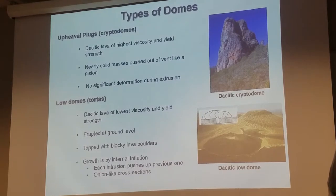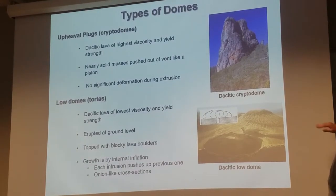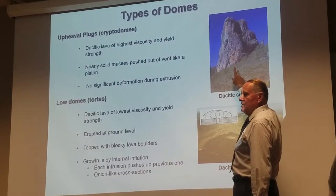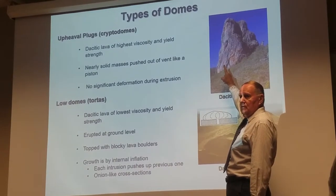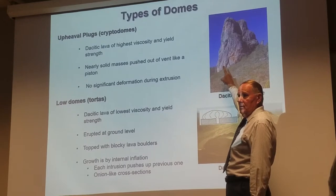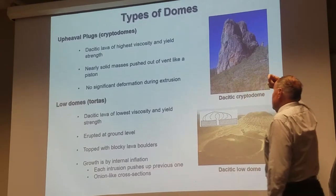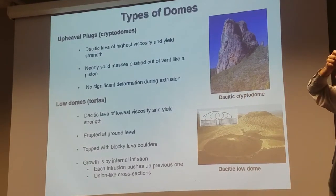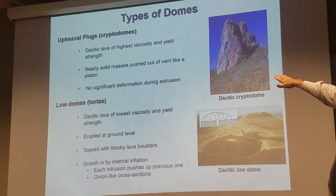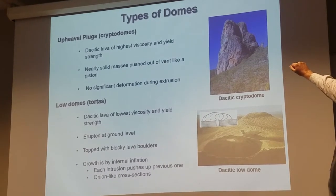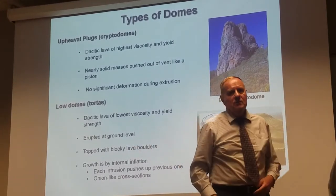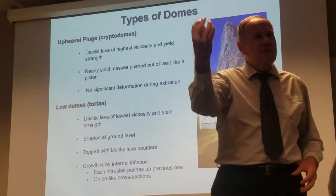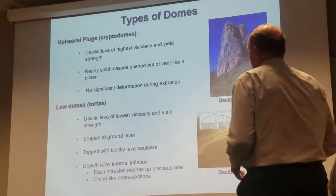Here's an acidic cryptodome — notice it's just a plug, like a piston that gets shot up due to the pressure of the extrusion. These are very high viscosity, relatively low volatile content, pushed up as a solid just like a piston, with no significant deformation during extrusion — it's just coming directly out of the vent without any severe deformation.